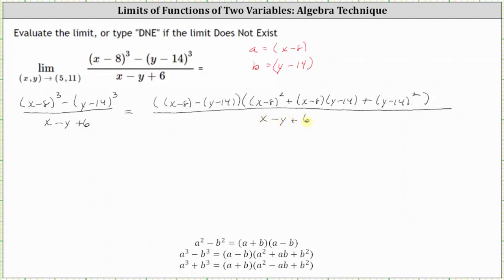And now let's simplify this first factor in the numerator. If we clear the parentheses, we have x minus 8 minus y plus 14. And notice negative 8 plus 14 is equal to 6, leaving us with x minus y plus 6, which is also a factor in the denominator. And therefore, we'll be able to simplify.